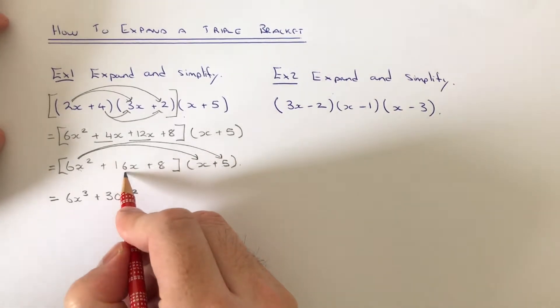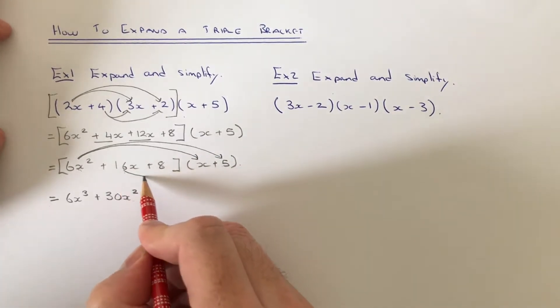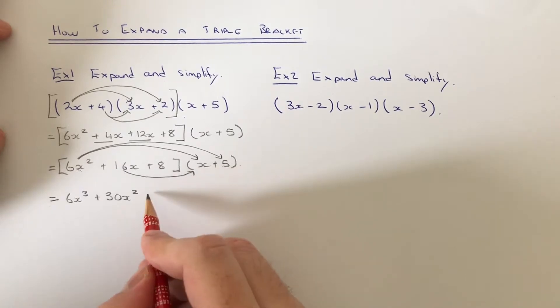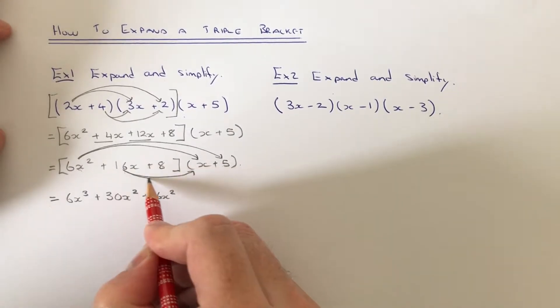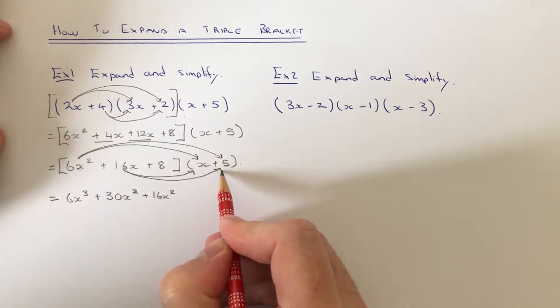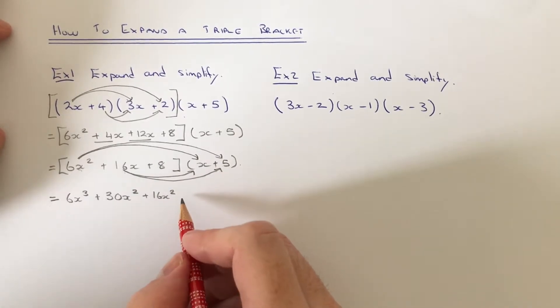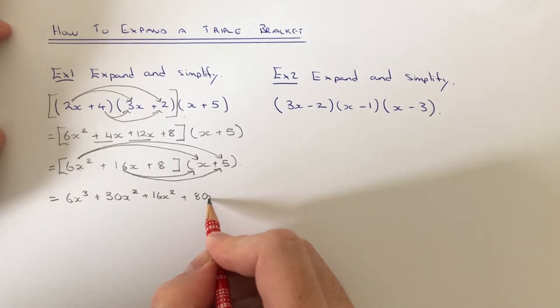Then move on to the 16x. So if we do 16x times x, that's 16x squared, and also do 16x times the 5, which is going to be 80x.